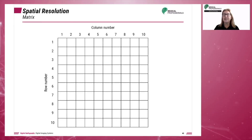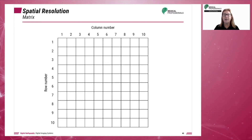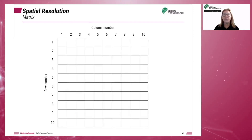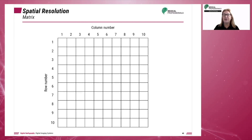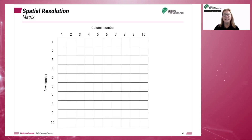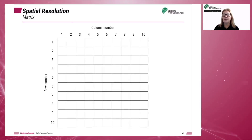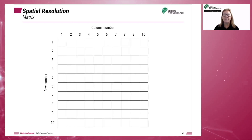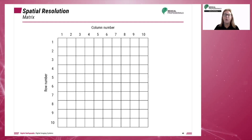A matrix is an arrangement of numerical values in a square of rows and columns. Each square is a pixel or picture element, which is the smallest element in a digital image. Each pixel in a digital image represents a discrete numerical value that corresponds to a brightness level or shade of gray. Each pixel can be identified by its column and row, otherwise known as its address or location.